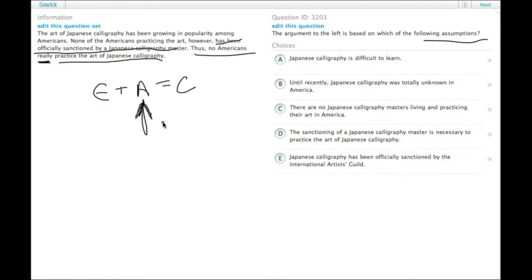Without even looking at the answer choices, we would figure it would be something like 'in order to really practice calligraphy, you need to be sanctioned by a Japanese calligraphy master.' The assumption we're looking for is going to be a very small link between the evidence and the conclusion.